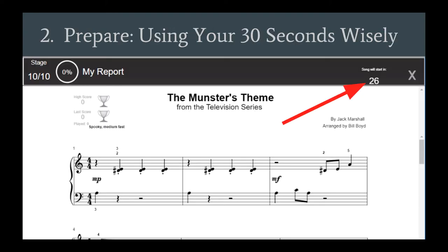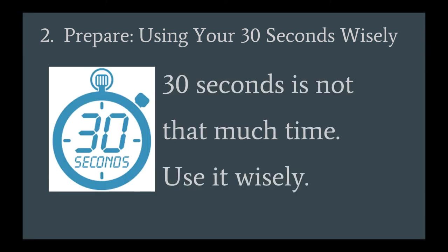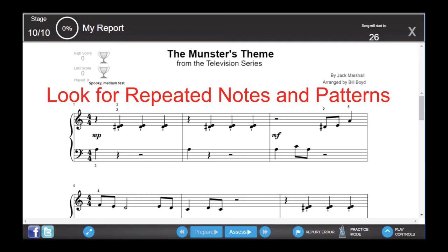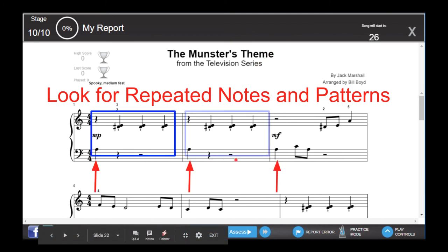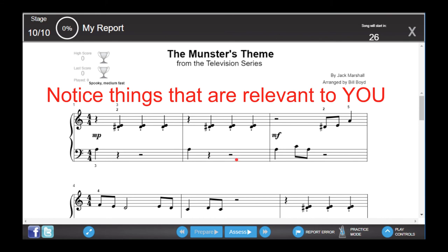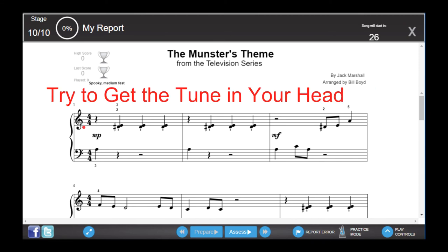Tip number two, you only have 30 seconds to look at a song. What do you look for? Remember, 30 seconds is not that much time, so use it wisely. The first thing I would say is look for repeated notes and repeated patterns. Next, notice the things that are relevant to you. Now, this will change as your understanding of music notation increases. And finally, try to get the tune in your head. And then when you go back to play it, it is much easier.